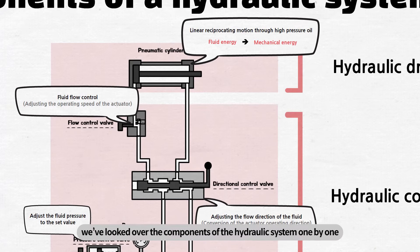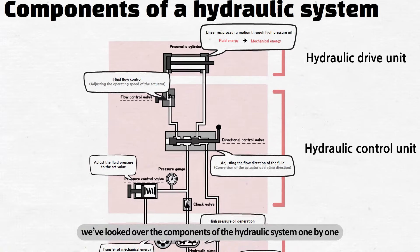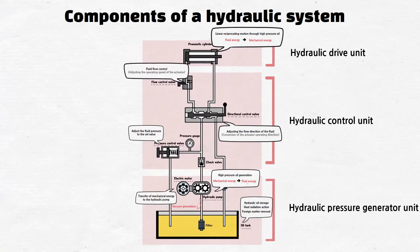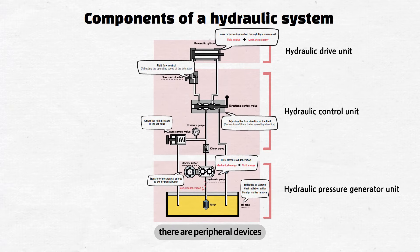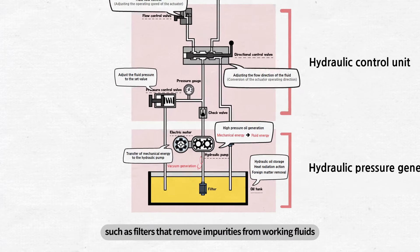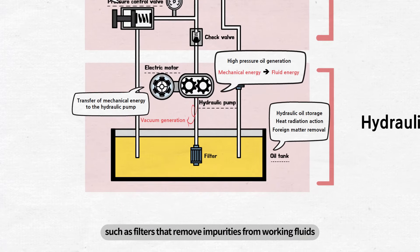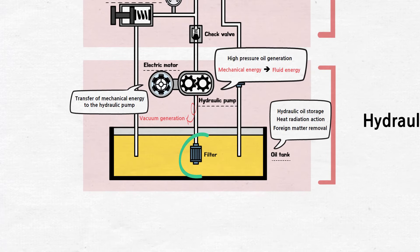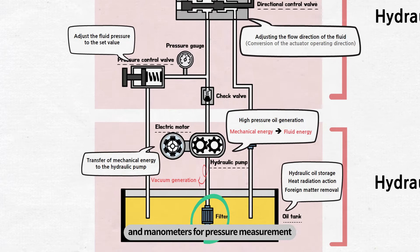So far, we've looked over the components of the hydraulic system one by one. Other than the main devices, there are peripheral devices, such as filters that remove impurities from working fluids, and manometers for pressure measurement.